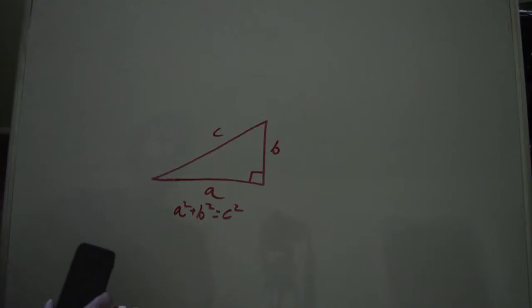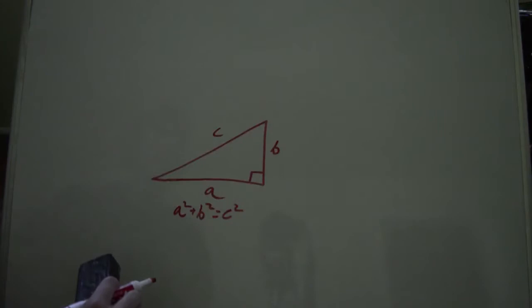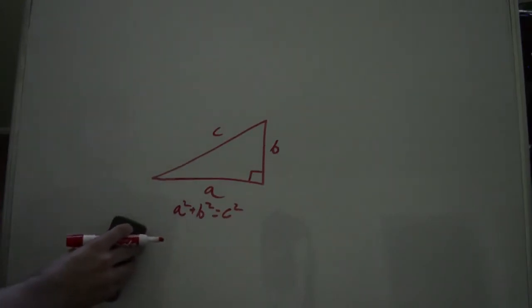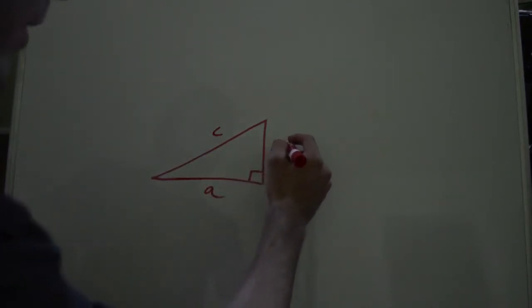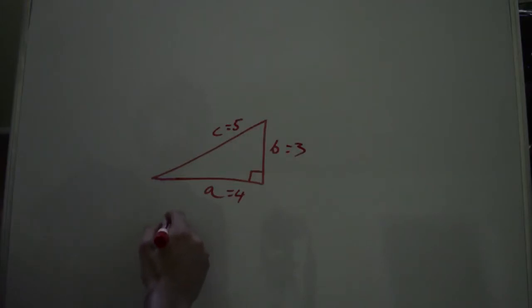So a Pythagorean triple is values for a, b, and c such that a, b, and c are in the set of natural numbers. Now what are natural numbers? Natural numbers are counting numbers simply. They're just 0, 1, 2, 3, 4, 5, and so on. So all we need to find is numbers such that b equals 3, a equals 4, and c equals 5 so that 3 squared plus 4 squared equals 5 squared. In this case 9 plus 16 is 25 which is 5 squared.